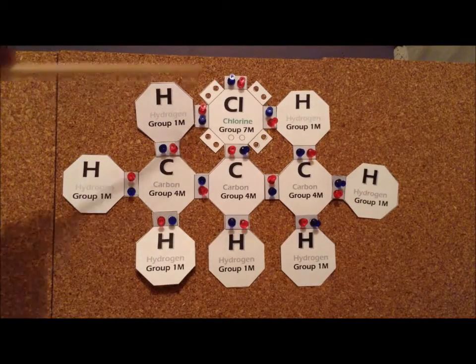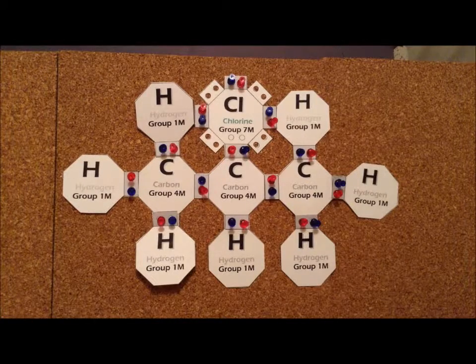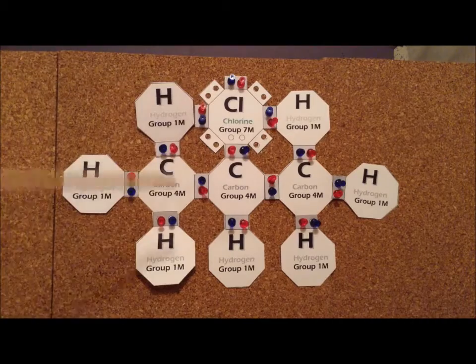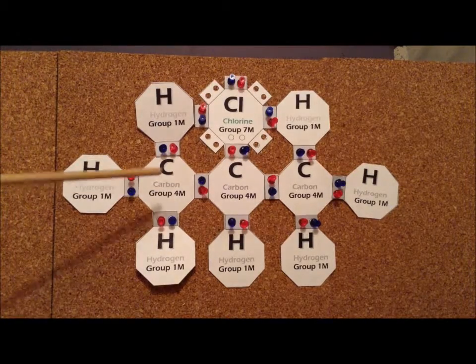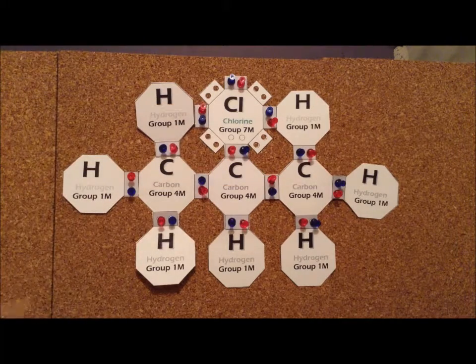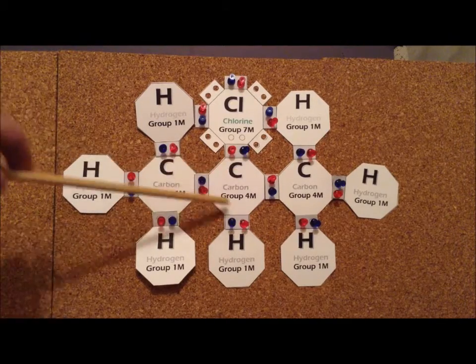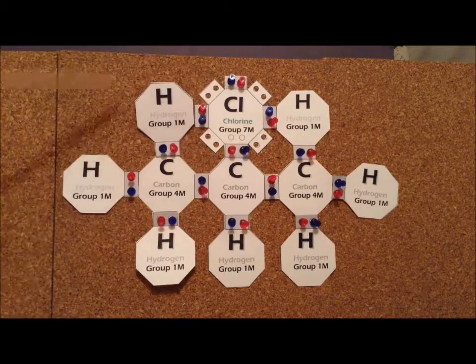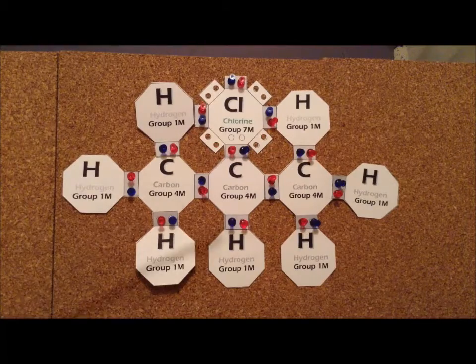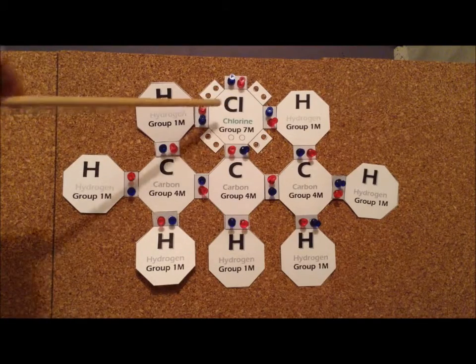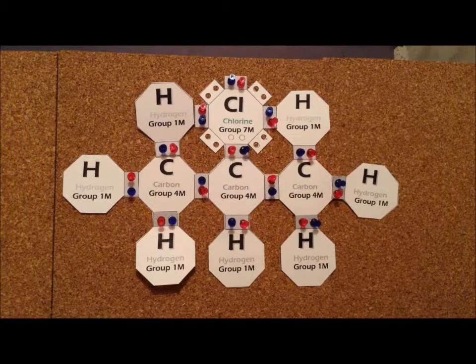Here, we've attached the chlorine atom to the middle carbon. In this case, we can call it 2-chloropropane, or the other, slightly older style is to call it isopropyl chloride. Isopropyl means that we have a three carbon unit and our substituent is going to be attached to the center carbon. So either 2-chloropropane or isopropyl chloride. And note that this is distinct from the compound where the chlorine is attached to the first carbon, the n-propyl chloride or 1-chloropropane.